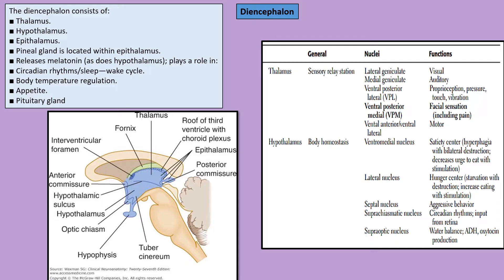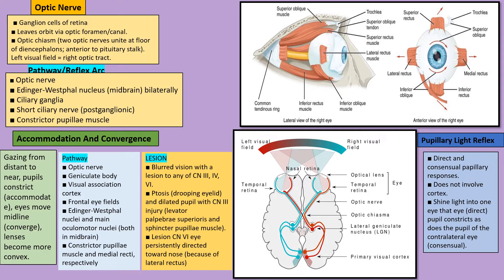For the hypothalamus, we should know all the nuclei because hypothalamus is involved in homeostasis. Body temperature is controlled by hypothalamus, which also controls hunger and satiety. The subthalamic nucleus is involved in aggressive behavior, the suprachiasmatic nucleus in circadian rhythm, and very importantly the supraoptic and paraventricular nuclei produce ADH and oxytocin.